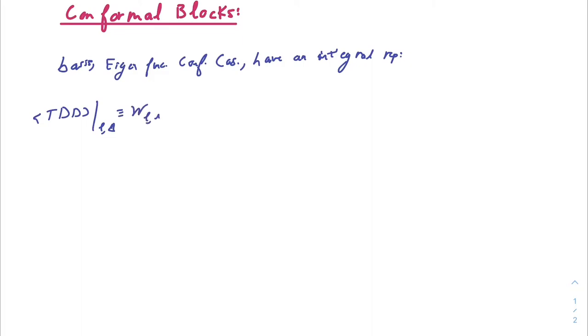Conformal blocks are entirely kinematic objects, totally fixed by conformal symmetry. They form a complete basis of functions for correlators, and they are eigenfunctions of a conformal Casimir operator, and most importantly for us, they admit an integral representation. Here, if we look at the specific conformal partial waves on the exchange of some operator of dimension delta and spin L, which is this W function,